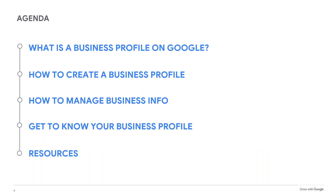Today's workshop will be divided into five sections. We'll spend the first few minutes explaining a business profile on Google — what it is, what it includes, and where it appears. Next, we'll review the steps to creating and verifying your free business profile. Third, we'll discuss how to manage your business information. Then, I'll give you a tour of your business profile and show you how to make updates. Finally, I'll wrap up with a quick recap and some suggested resources to help you learn more.